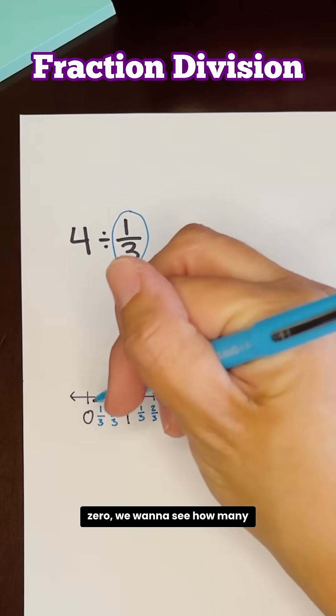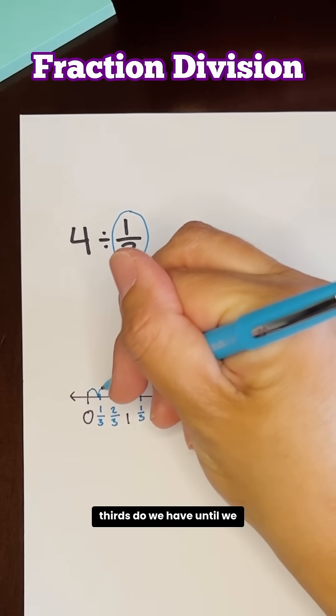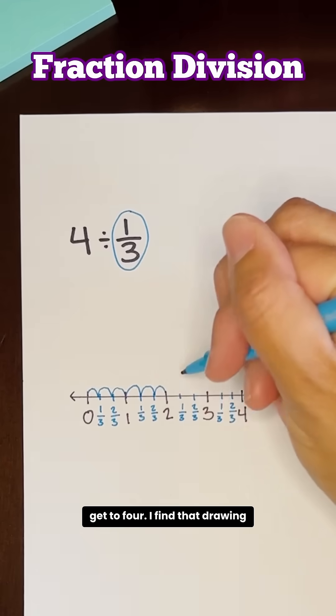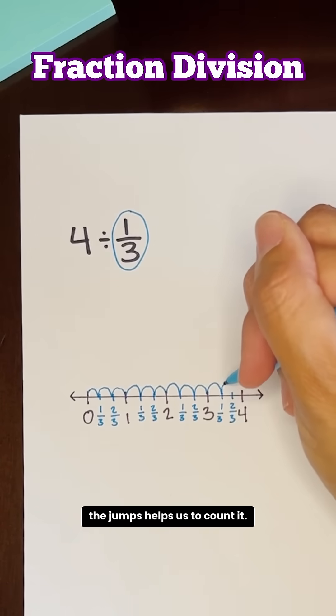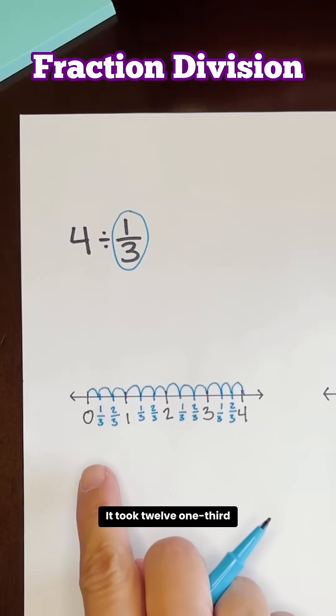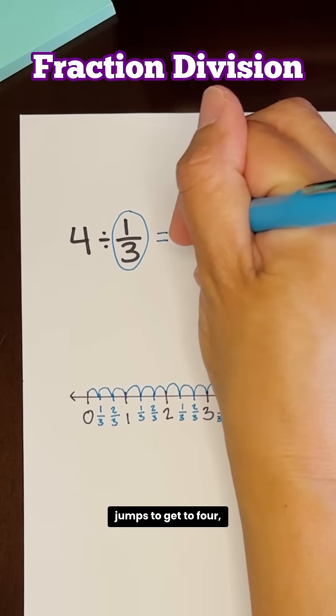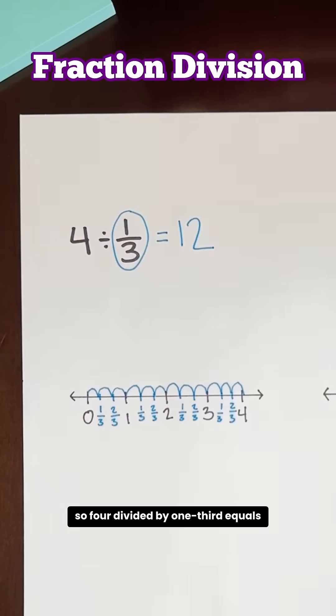Now starting at zero, we want to see how many thirds do we have until we get to four. I find that drawing the jumps helps us to count it. It took twelve one-third jumps to get to four, so four divided by one-third equals twelve.